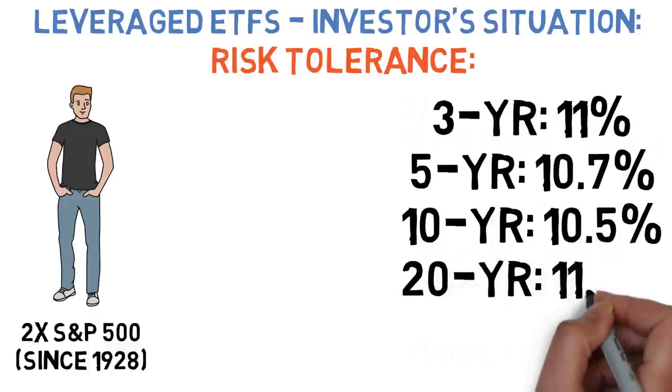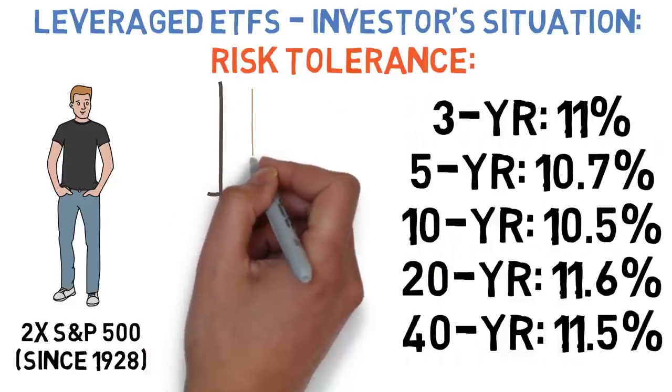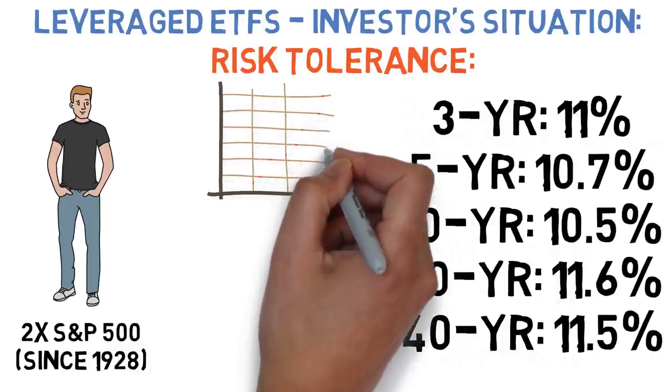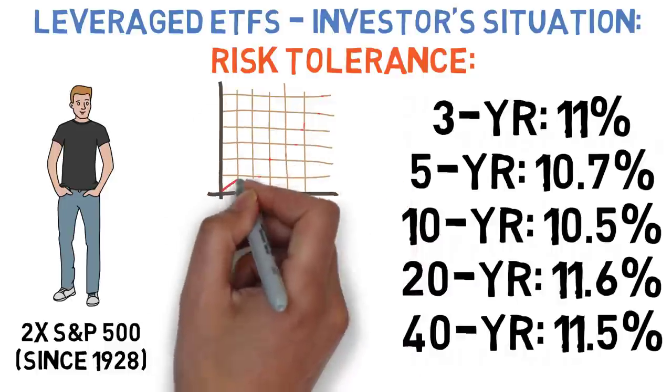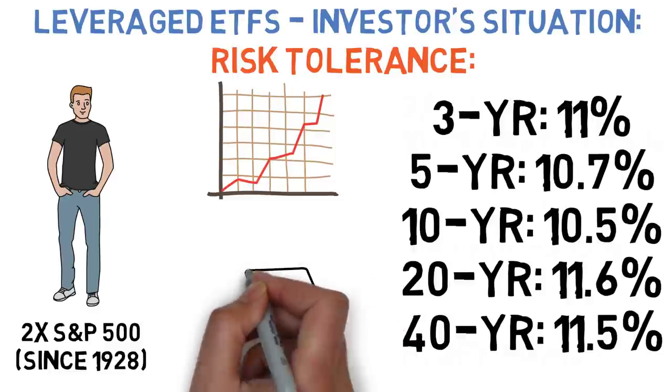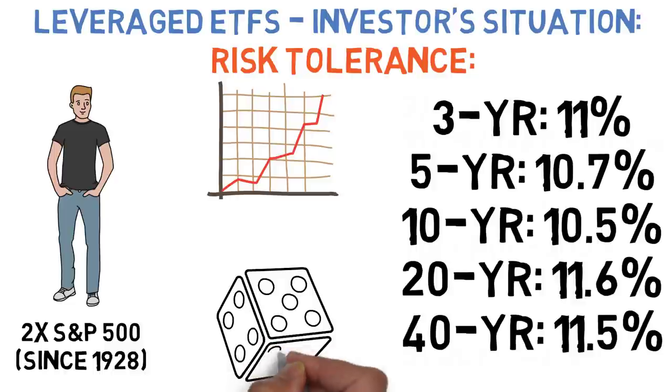And as we expand the time frame that we're looking at, even those average returns start to peter off due in part to that leverage exacerbated volatility drag that we discussed earlier. The average rolling 3, 5, 10, 20, and 40-year returns would have been 11%, 10.7%, 10.5%, 11.6%, and 11.5% respectively. But those average returns can be a bit misleading. As we know, some years, and even some decades, are better for investments than others. In the stock market, the 1990s and 2010s were generally better times for appreciation than the 2000s. And just like with everything else we've covered today, adding leverage to that situation only exaggerates the effects even more than usual. Put another way, the returns that John would have received from his investments are more dependent on him being lucky enough to start investing on the right day than they would be without leverage.